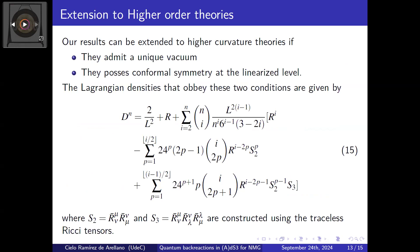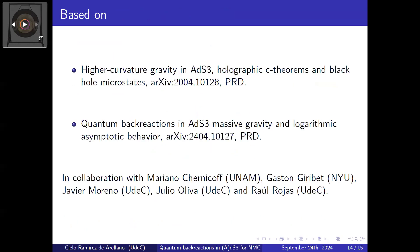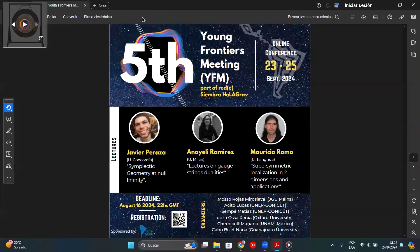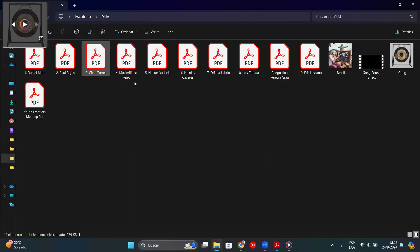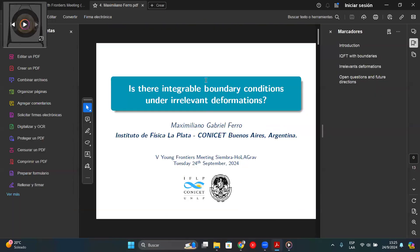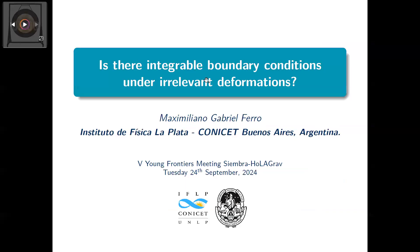To extend this beyond quadratic curvature theories to arbitrary higher curvature, you only need a theory with a unique vacuum that also possesses conformal symmetry at the linearized level. The Lagrangian in equation 15 obeys those two conditions, and you can repeat the whole process.